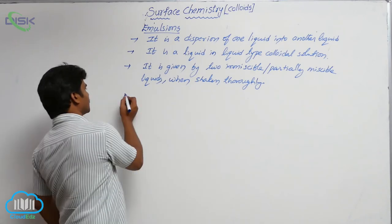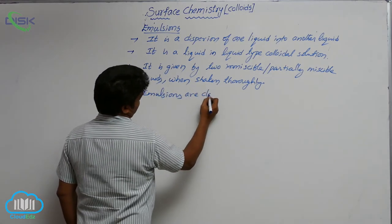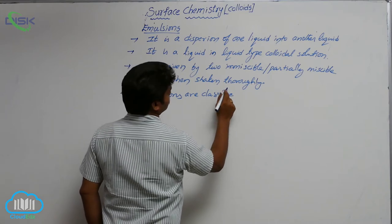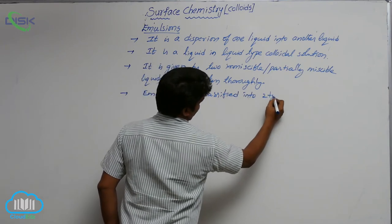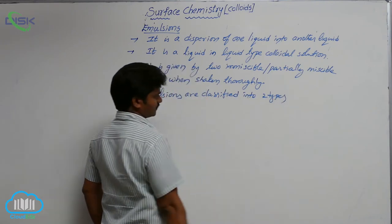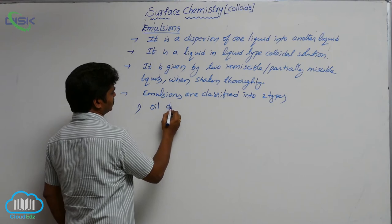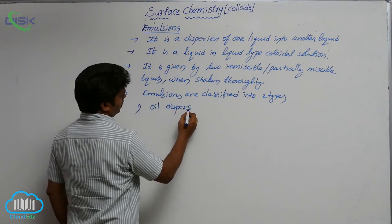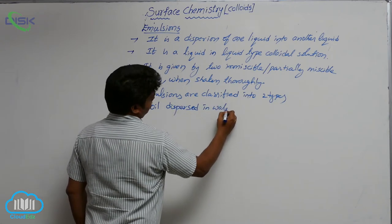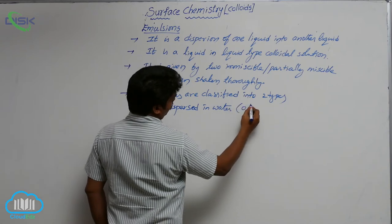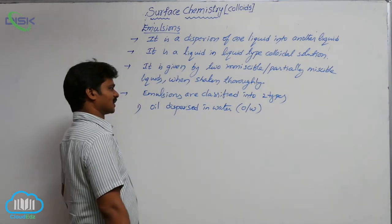Emulsions are classified into two types. The first one is oil dispersed in water, denoted by O/W. O/W indicates oil dispersed in water type.